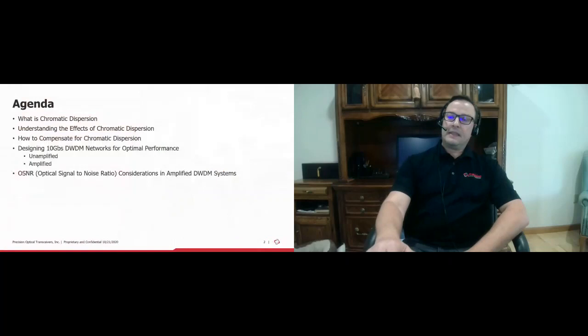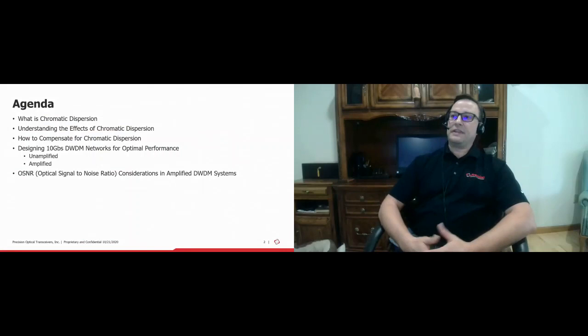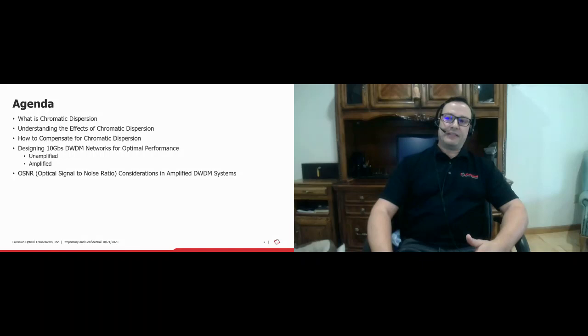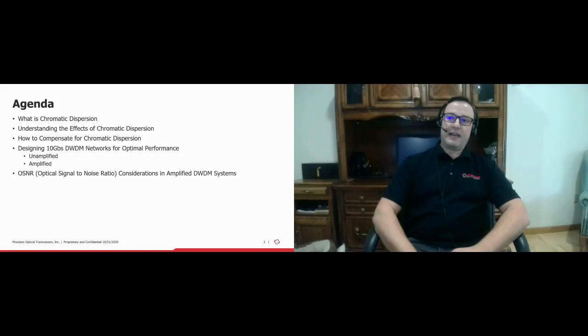Today's topic, we're going to discuss chromatic dispersion in 10-gig DWDM systems. Our agenda will be to understand what chromatic dispersion is, its effects in terms of network design and use cases, how to compensate for it, and designing 10-gig DWDM networks for optimal performance — both amplified and unamplified systems. We'll also look at optical signal-to-noise ratio considerations, which is an important factor in amplified DWDM networks.